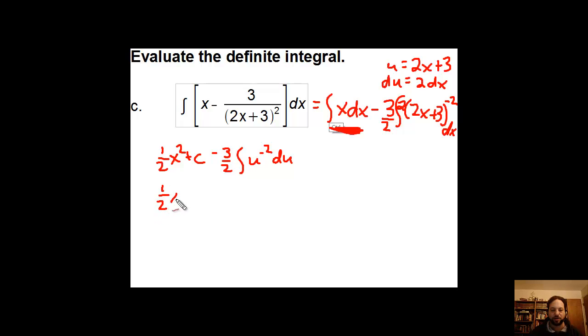I can take care of that one, no problem, that's simply going to be minus 3 halves times u to the negative 1 over negative 1 plus c. The two plus c's I'm going to stick together. I'm going to simplify this a bit and end up with one half x squared. This will be plus because we do have the negative 1 on the bottom, so that's going to be plus 3 over 2 times u to the negative 1, which is just 2x plus 3 on the bottom, and of course don't forget your plus c.